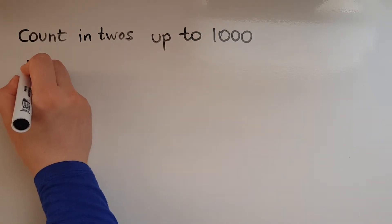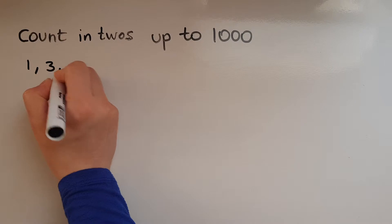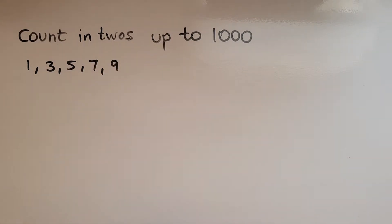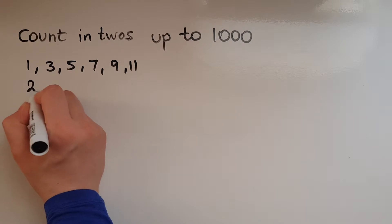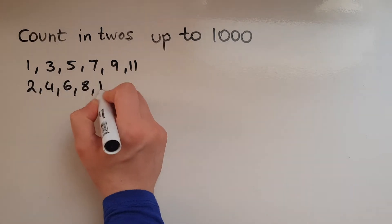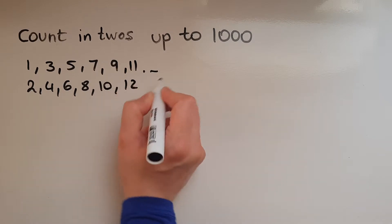So 1, 3, 5, 7, 9, 11. This is counting in twos. Or I could start with 2 and 4, 6, 8, 10, 12 and so on.